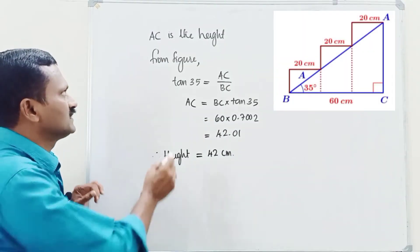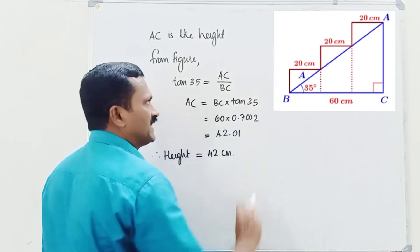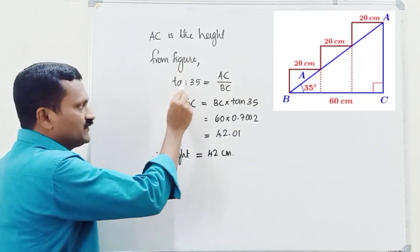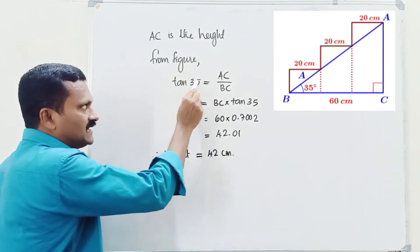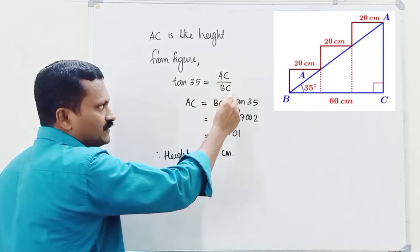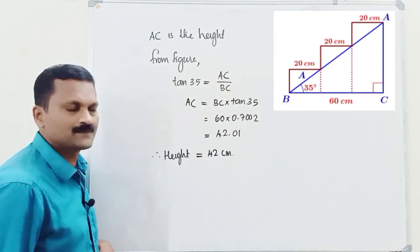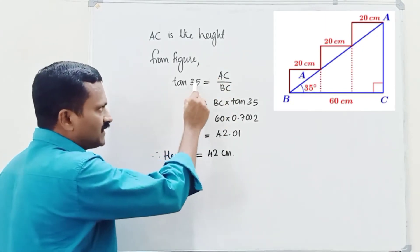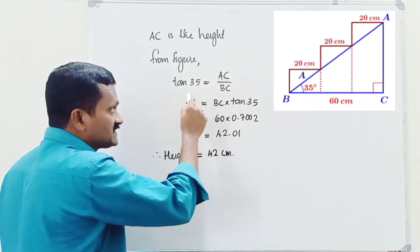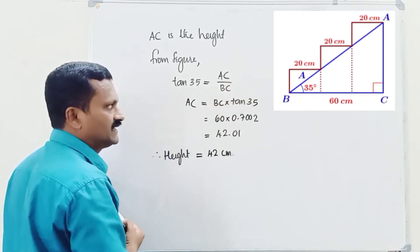In the figure, it is clear that AC is the height of the man. From the figure, we can write tan 35 equal to opposite side by adjacent side, that is AC by BC. Taking cross multiplication, AC equal to BC into tan 35.